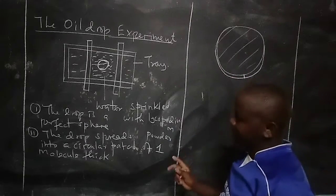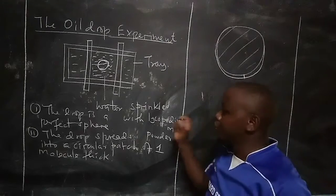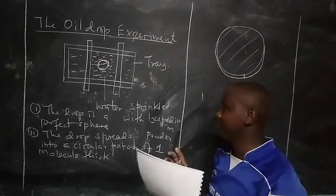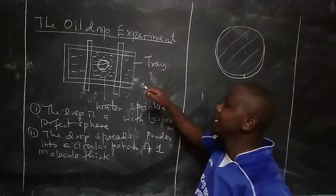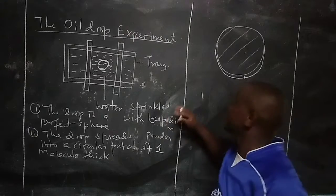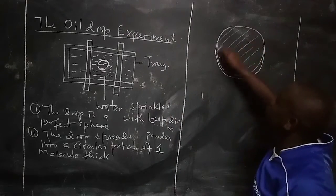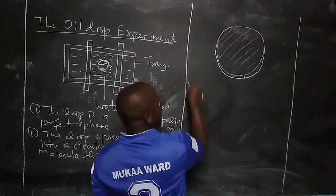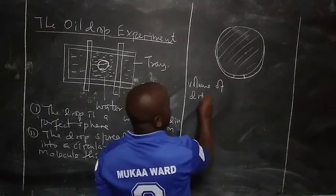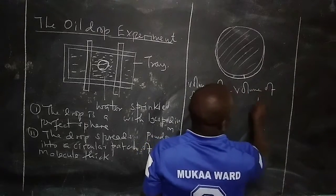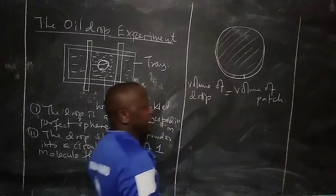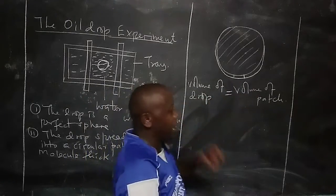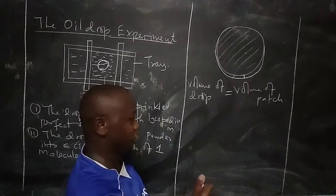Because the diameter of the complete oil drop can be measured, we relate the volume of the complete oil drop before it spreads with the volume of the circular patch it spreads into. The volume of the oil drop is equal to the volume of the patch. This is very important to note.